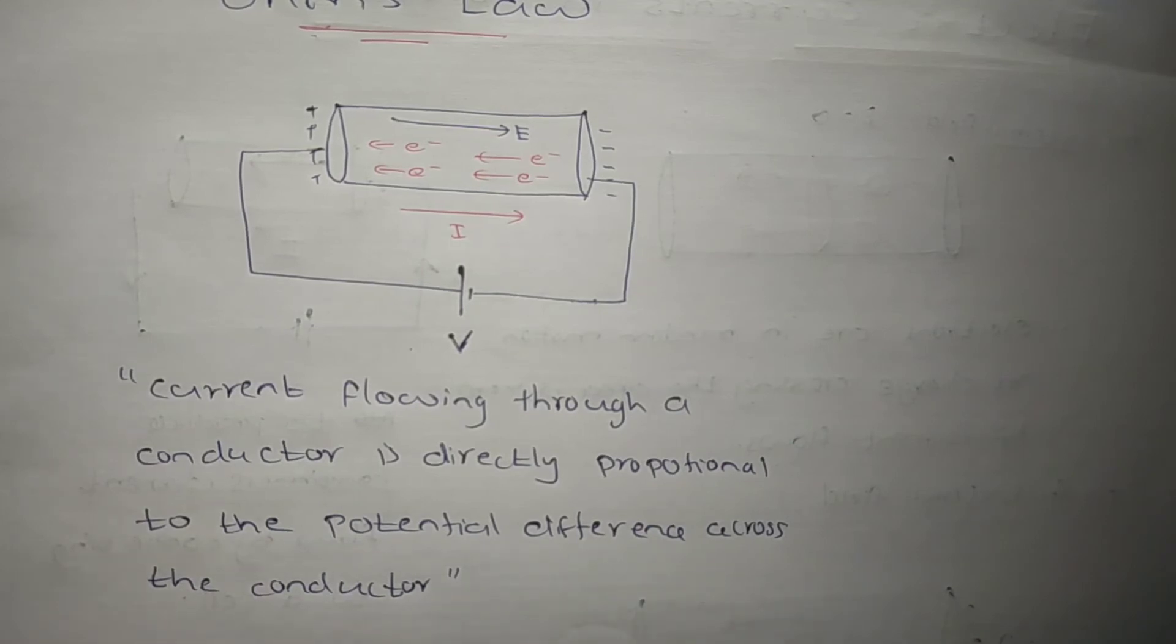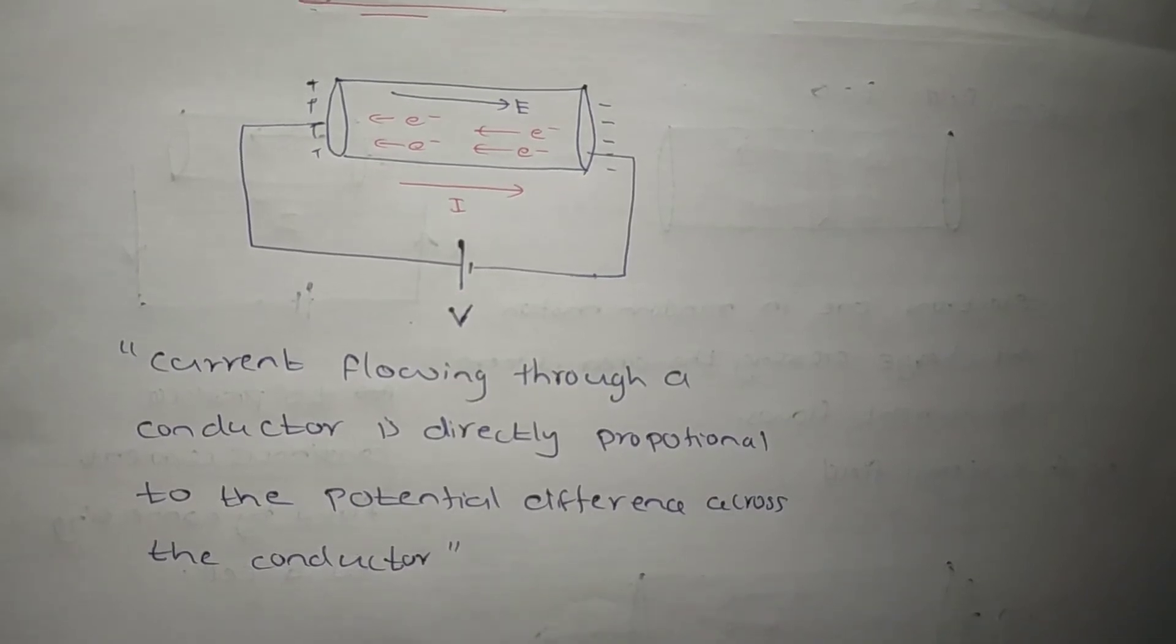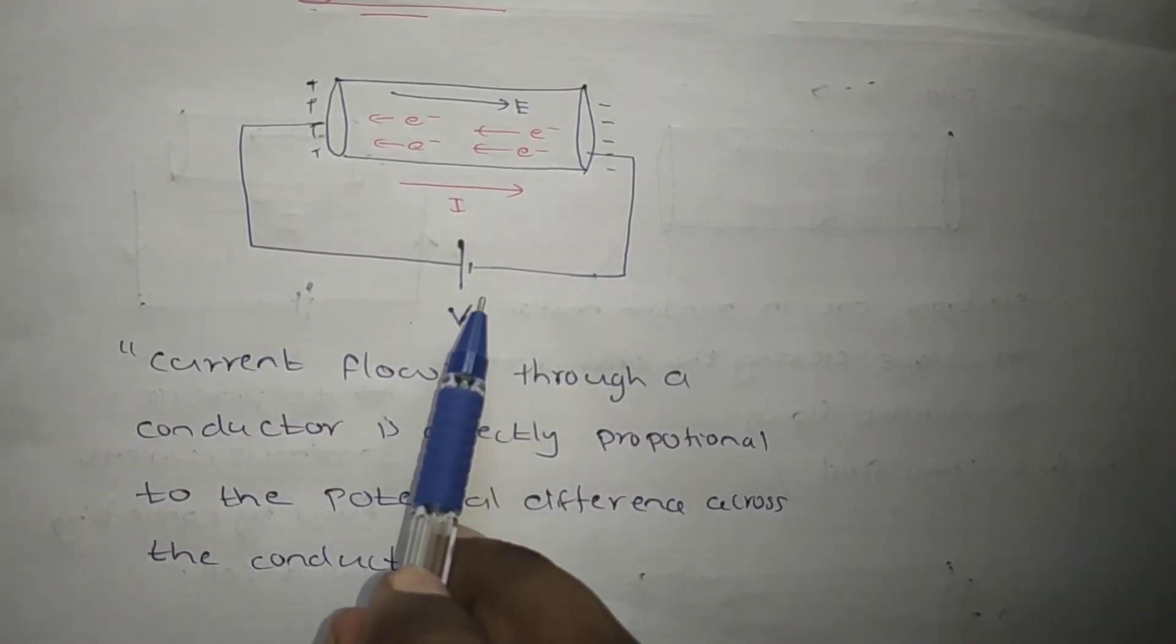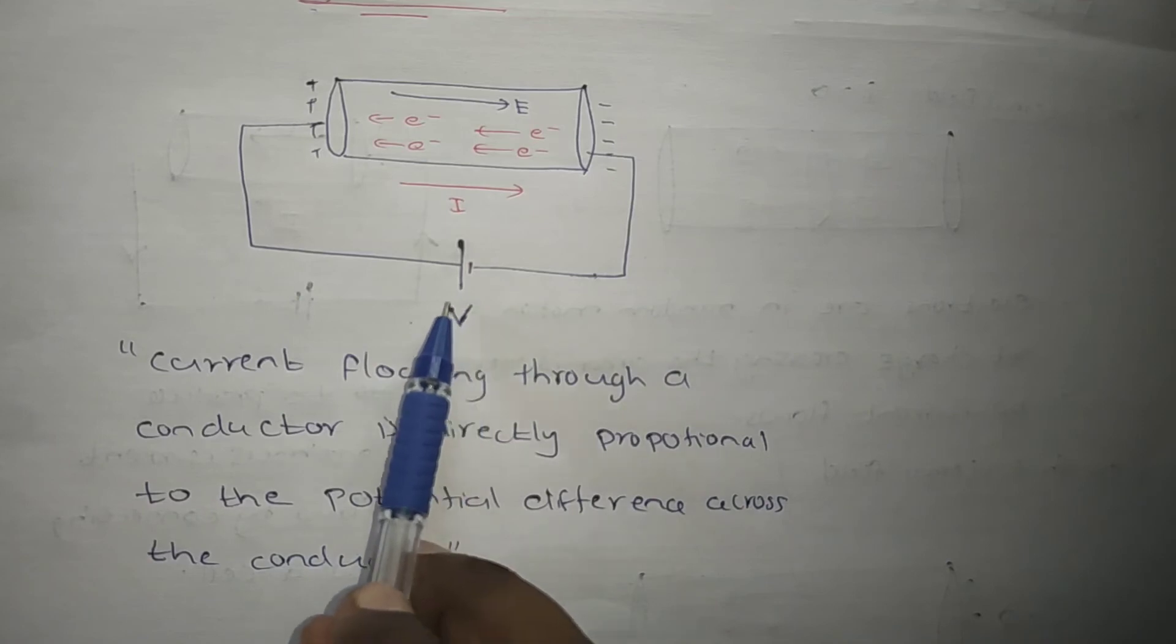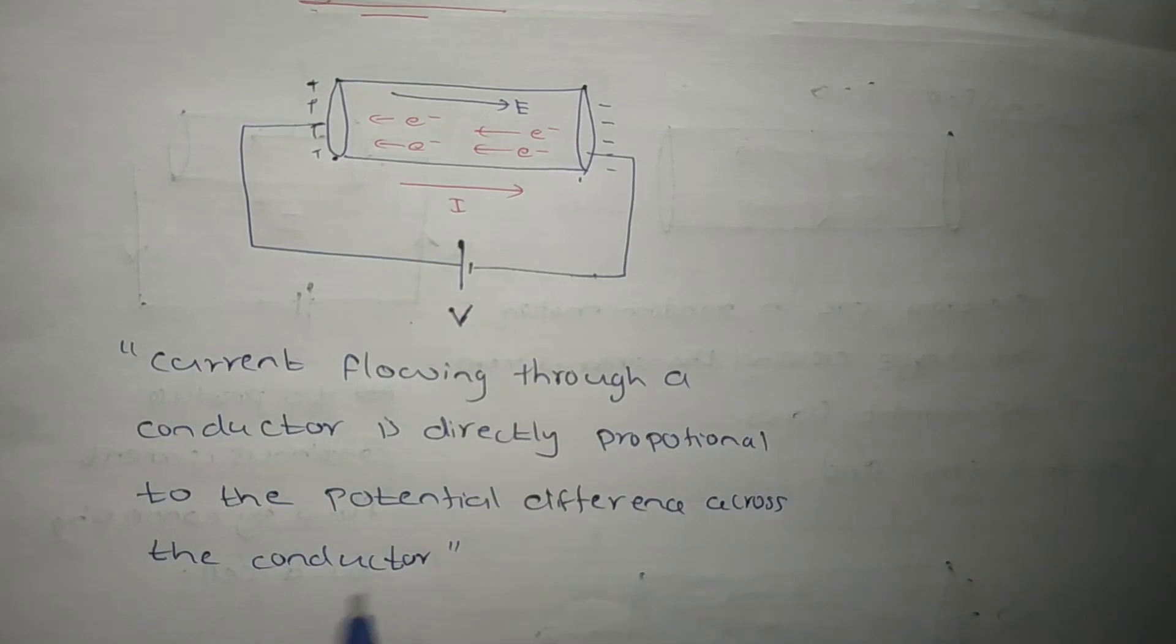This is the statement of Ohm's law. So if there is a potential difference between these two ends of the conductor V, the amount of current I flowing through a conductor is directly proportional to the potential difference.